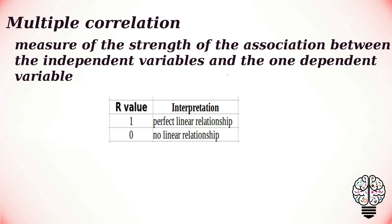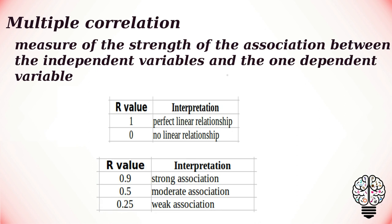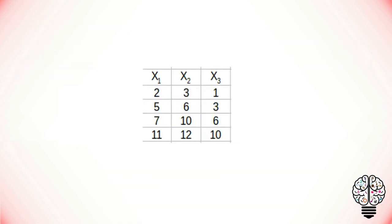If R is equal to 0, there is no linear association between the dependent variable and the independent variables. This table explains the weak and strong associations between variables. Let us take a look at an example to understand multiple correlation.